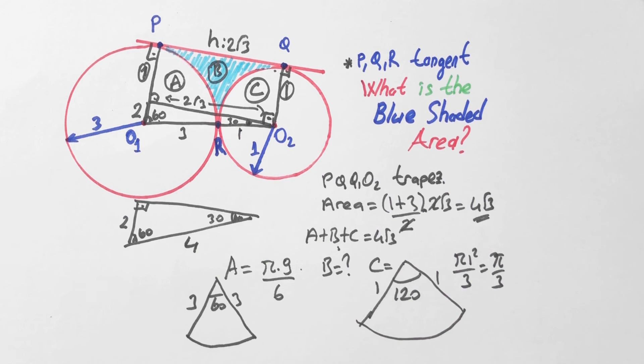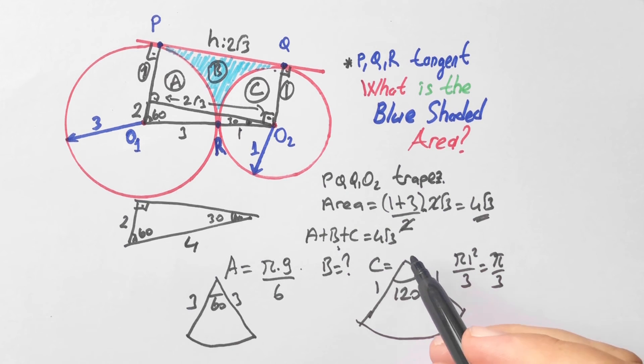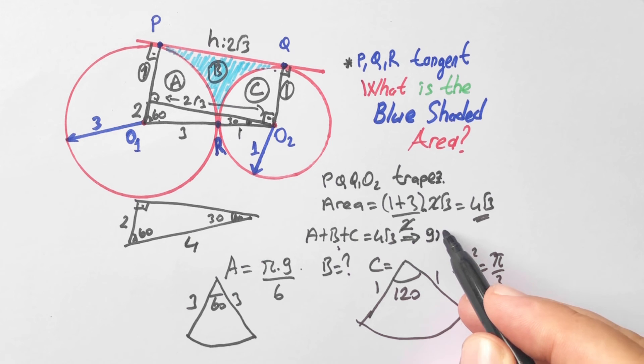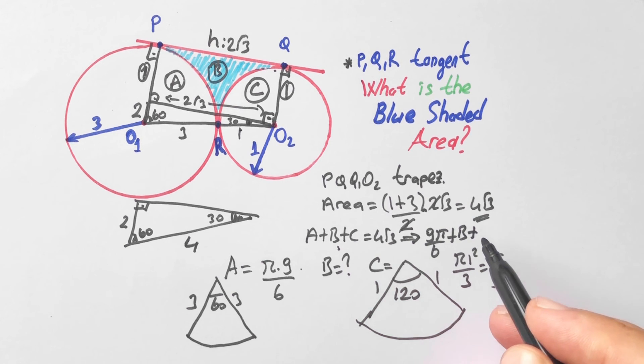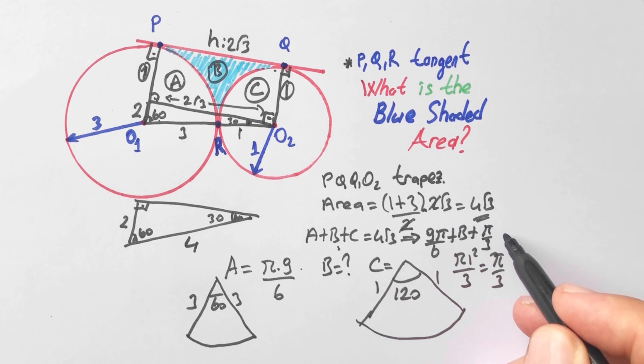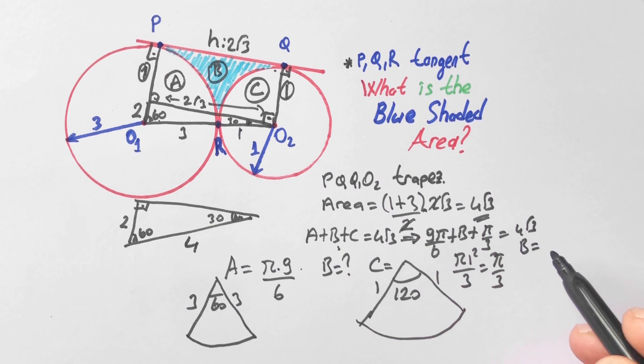Let's plug in the equation this value. A is π over 6 plus B plus π over 3 equals 4√3. So B is equal to 4√3 minus π over 6 minus π over 3.